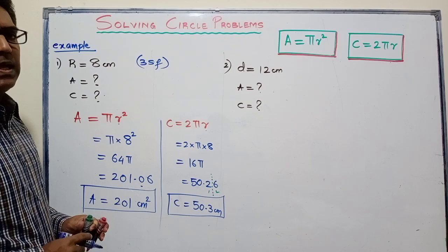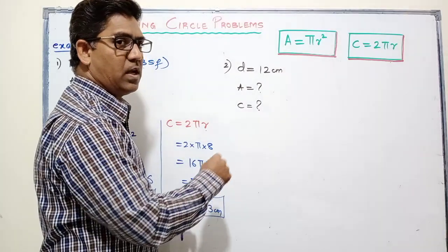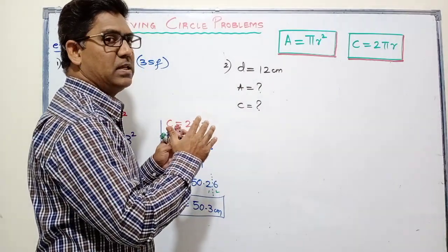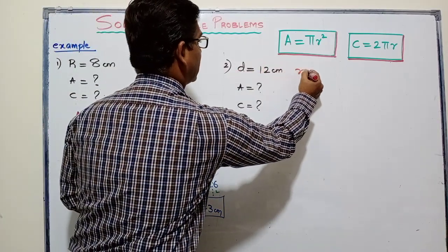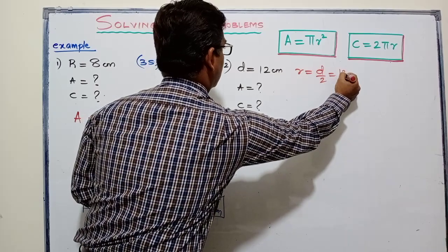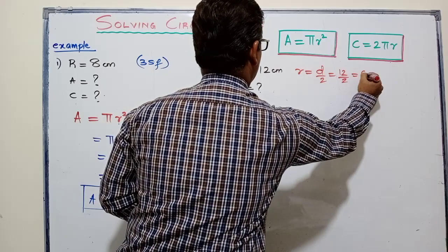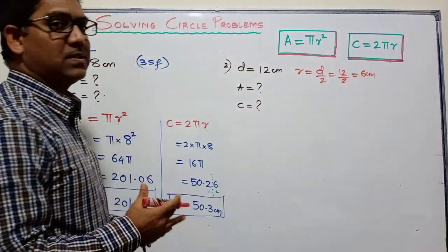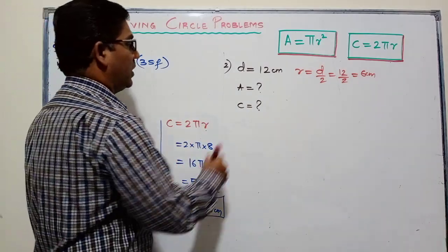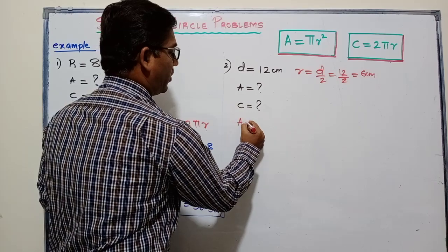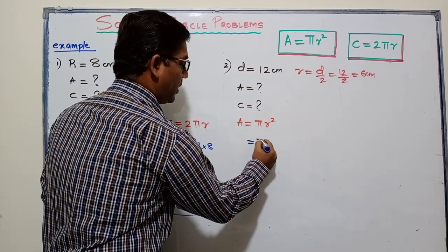Example 2: the diameter is given as 12 cm. We saw that diameter is twice the radius, so from the diameter we find the radius: radius equals diameter divided by 2, which is 12 ÷ 2 = 6 cm. Once we have radius = 6, the second example is almost similar to Example 1. Now let's find the area. The formula for area is πr². Substitute the value — we take the calculator value of π.